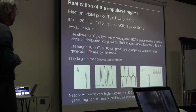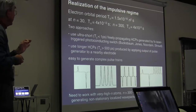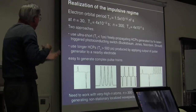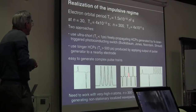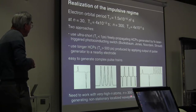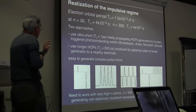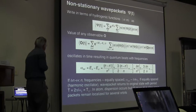What we do is use longer half-cycle pulses, typically with periods of 500 picoseconds up through a nanosecond, produced by applying the output pulse of a pulse generator to a nearby electrode. By using pulse splitters, pulse combiners, and multiple pulses, one can generate very complex trains of electric field pulses. The only problem is we have to work with very high-n atoms, usually about n equals 300, but this actually offers some advantages when generating non-stationary localized wave packets.